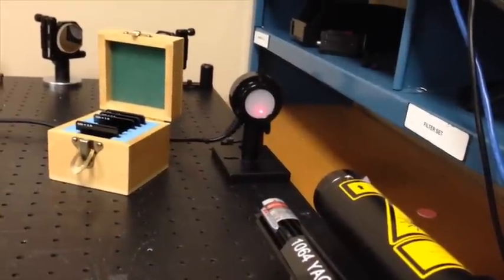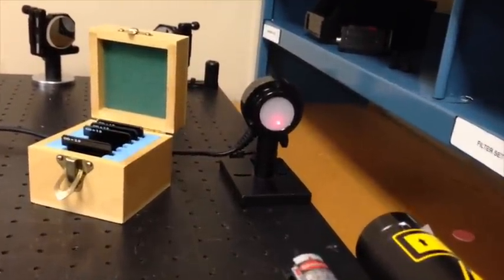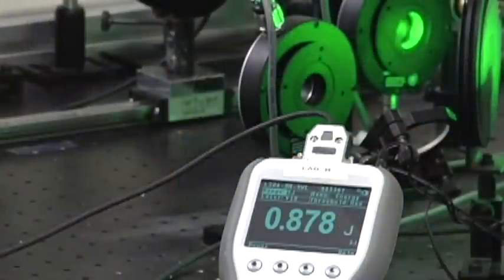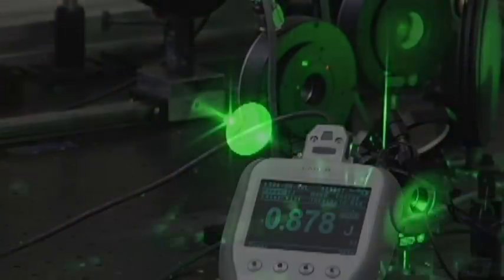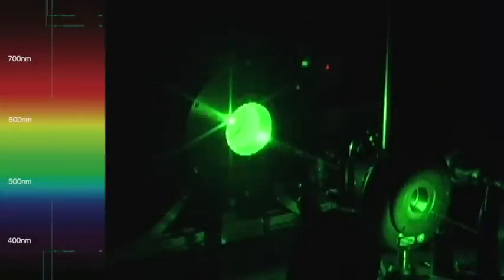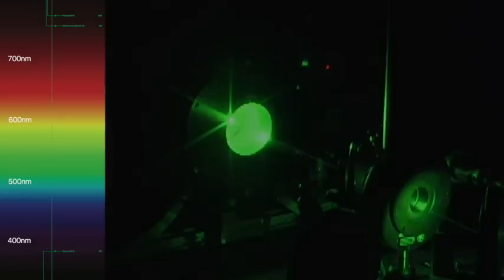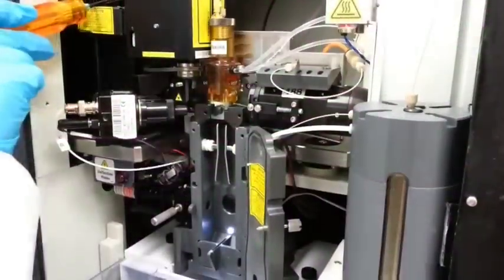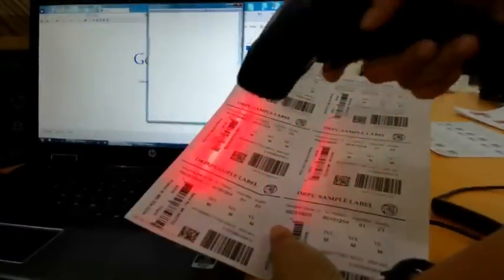For example, a PE50BF diff pyroelectric energy sensor monitors the pulse-to-pulse stability and dose of a laser. Visible lasers are used in many applications, including laser light shows, flow cytometry cell sorting, and barcode readers.